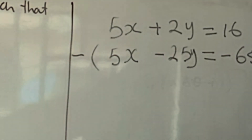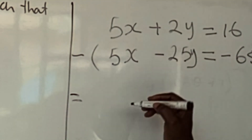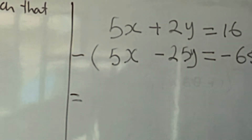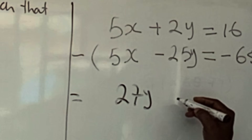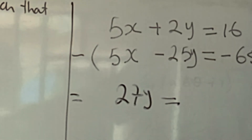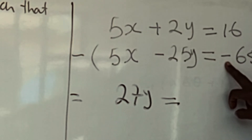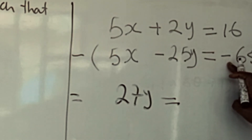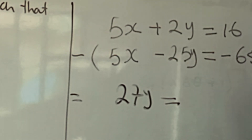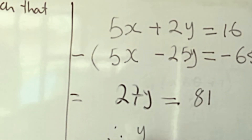Subtracting, 2y minus negative 25y gives 27y. So we have that 27y is equal to 16 minus negative 65. A minus times a minus is plus, so we have 16 plus 65 which is 81.